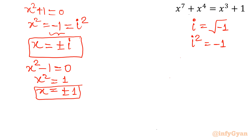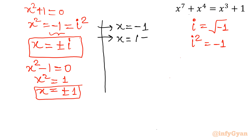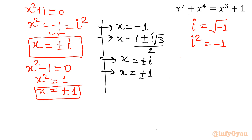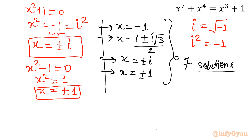Now we can write all 7 solutions. From the first equation: x = -1. From the second: the complex solutions x = (1 ± i√3) / 2. From the third equation: x = ±i. And the last two solutions are x = ±1. Out of the 7 solutions, 4 are complex, 3 are real, and x = -1 is a repeated solution.